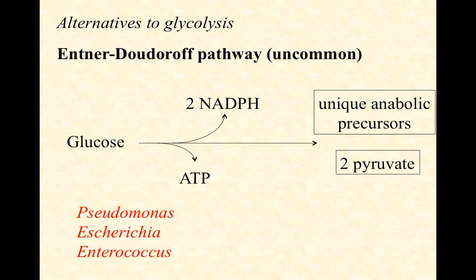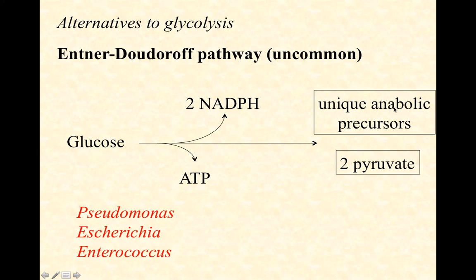The other alternative is called the Entner-Doudoroff pathway, which is much less common. Examples of bacteria with this pathway include Pseudomonas, Escherichia, and Enterococcus. In this pathway, glucose is rearranged into either two pyruvates — similar to glycolysis — or a series of unique anabolic precursor molecules for biosynthesis. Energetically, the cell gets one ATP per glucose and produces NADPH, just like the pentose phosphate pathway. Consider when an organism would favor this pathway over glycolysis.